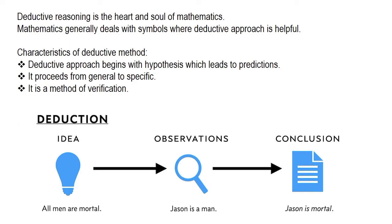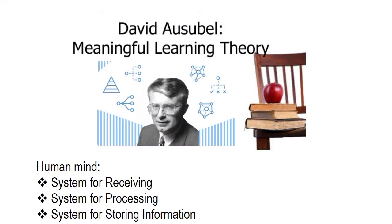Next, we move on to the deductive method. Deductive reasoning is the heart and soul of mathematics, which generally deals with symbols where the deductive approach is helpful. Some characteristics of deductive logic are: it begins with a hypothesis which leads to predictions; it proceeds from general to specific; and it is a method of verification.